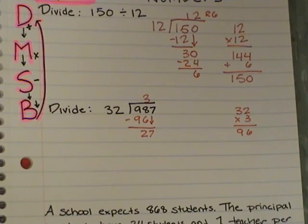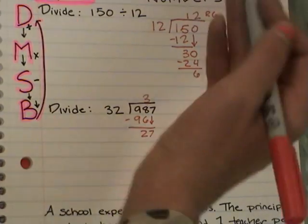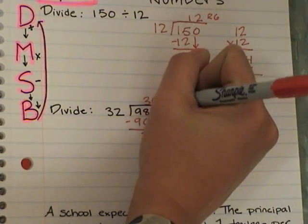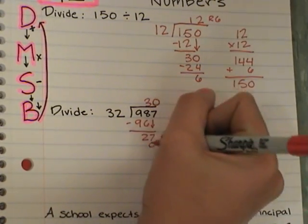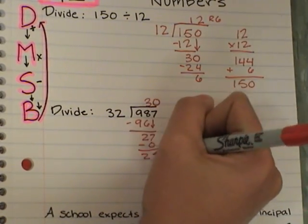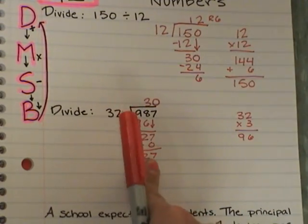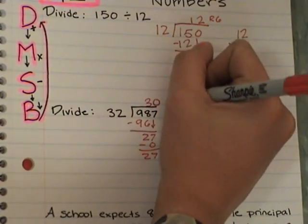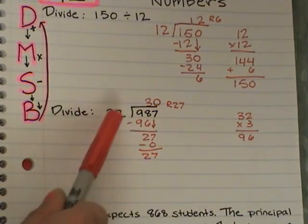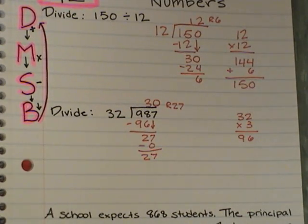And my answer is what? 0. So I have to put my 0 up here. 0 times 32 is 0. When I subtract, I get 27. Now I have nothing else to bring down, so 27 is my remainder, and that's okay. I know it's a really big remainder, but it's still smaller than our divisor, so that's okay.